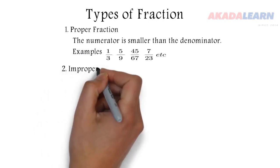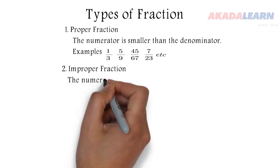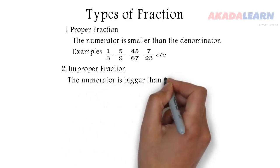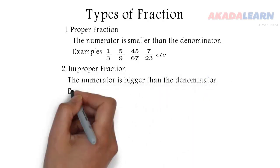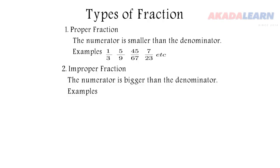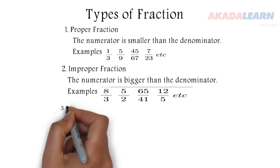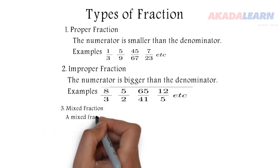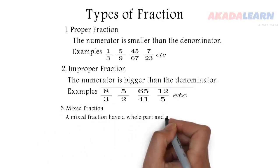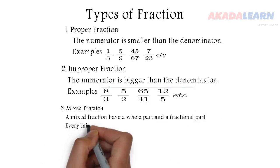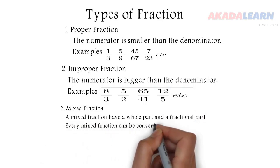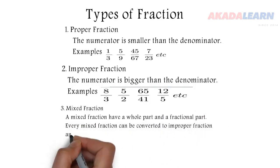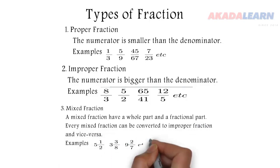Now we have what is called improper fraction. Improper fraction: the numerator is bigger than the denominator. Look at those examples there. Also, we have what is called mixed fraction. A mixed fraction has a whole part and a fractional part. And we can convert mixed fraction to improper fraction and vice versa. We have some examples of mixed fraction.